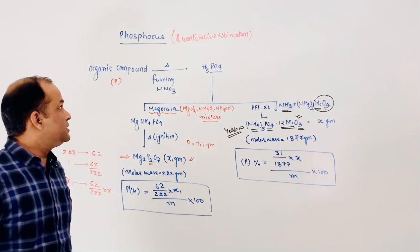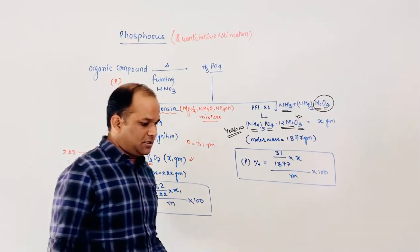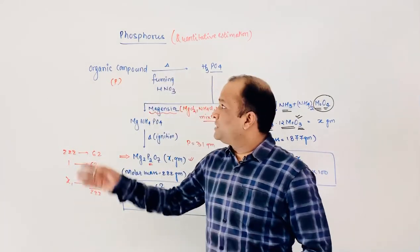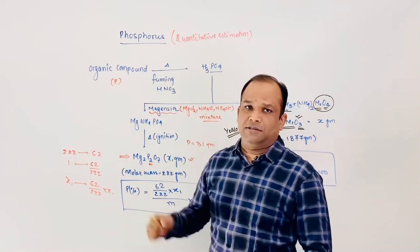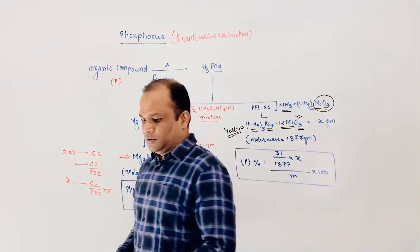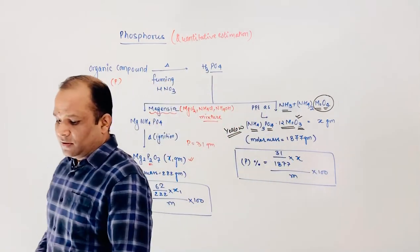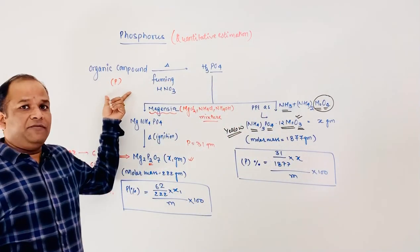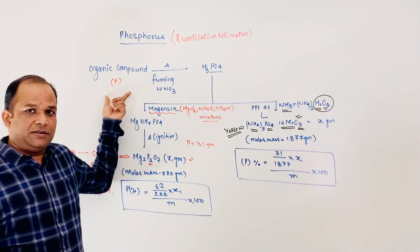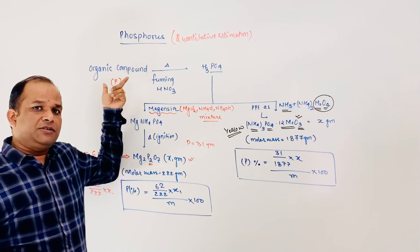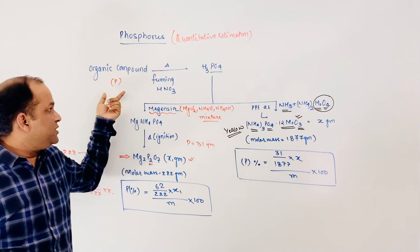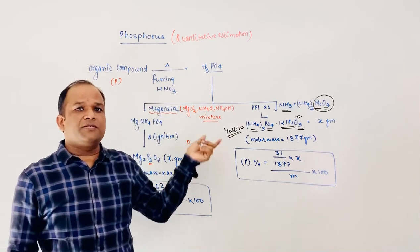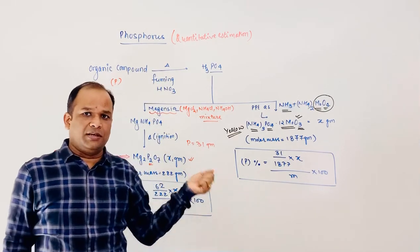Hello students. This is the video for quantitative estimation of phosphorus. If an organic compound contains phosphorus, for its quantitative estimation we heat this compound in the presence of fuming HNO3.